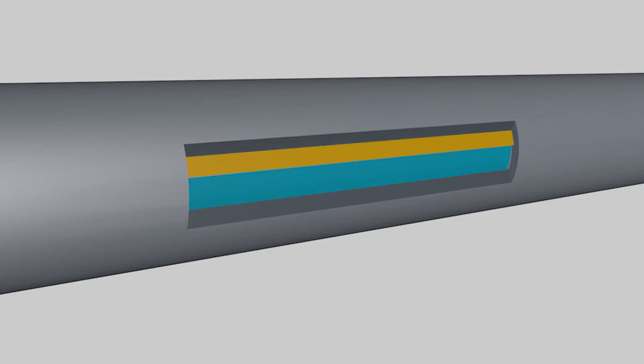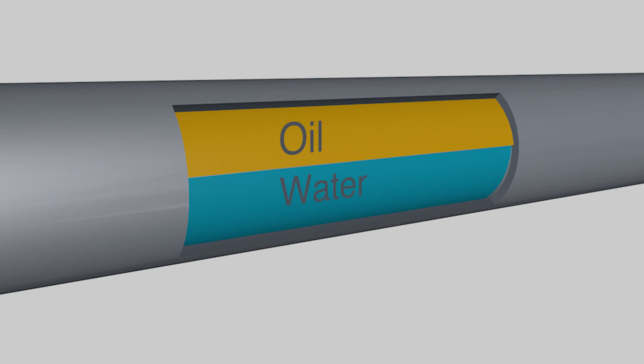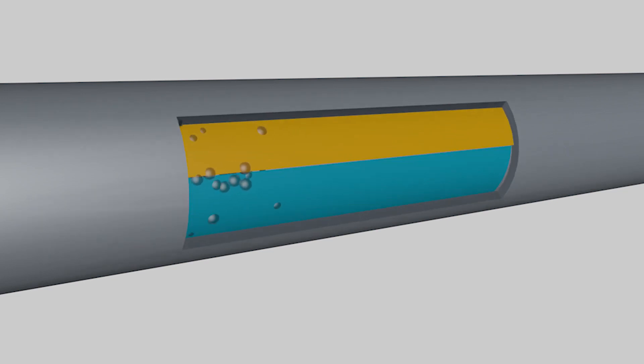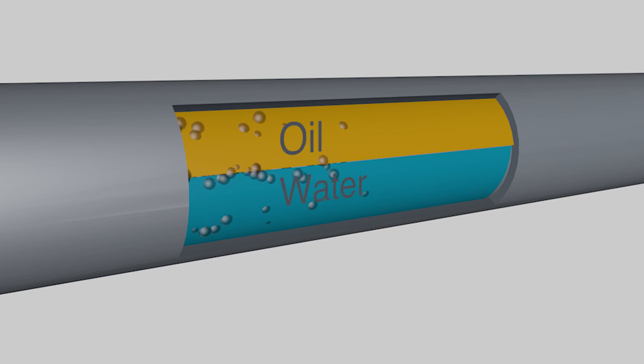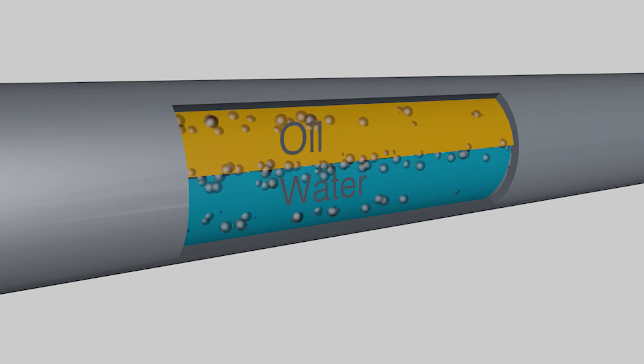The measurement of net oil and water cut by a Coriolis flow meter would be very straightforward, accurate, and reliable if only two-phase liquid existed — that is, oil and water. However, in many practical applications, it is very common to have entrained gas in the oil-water emulsion.